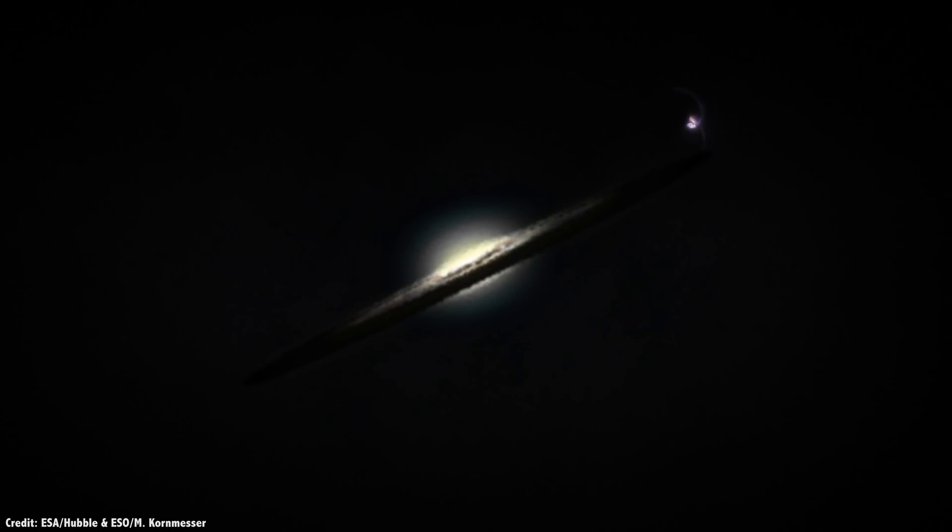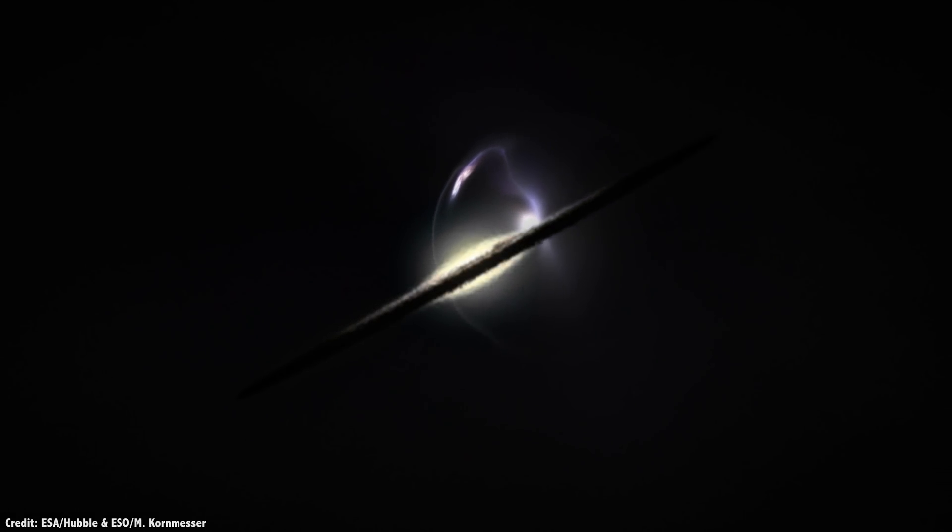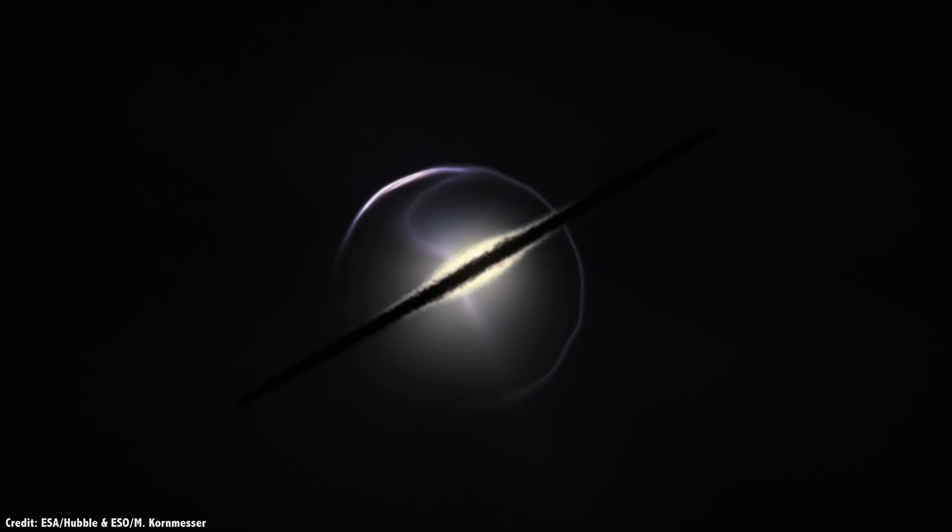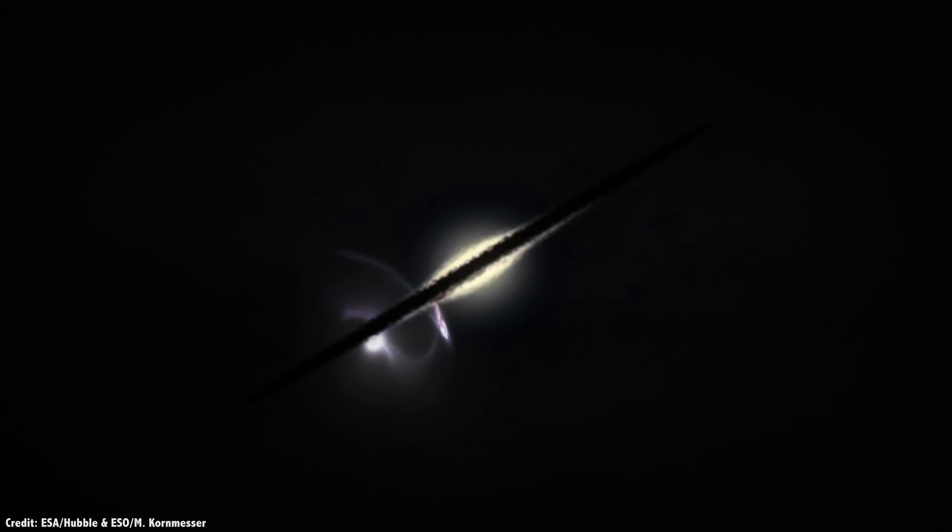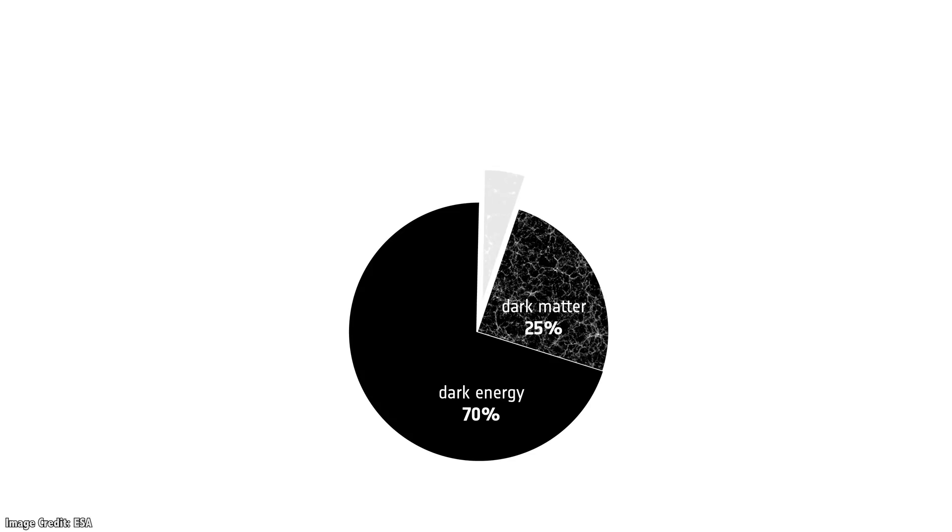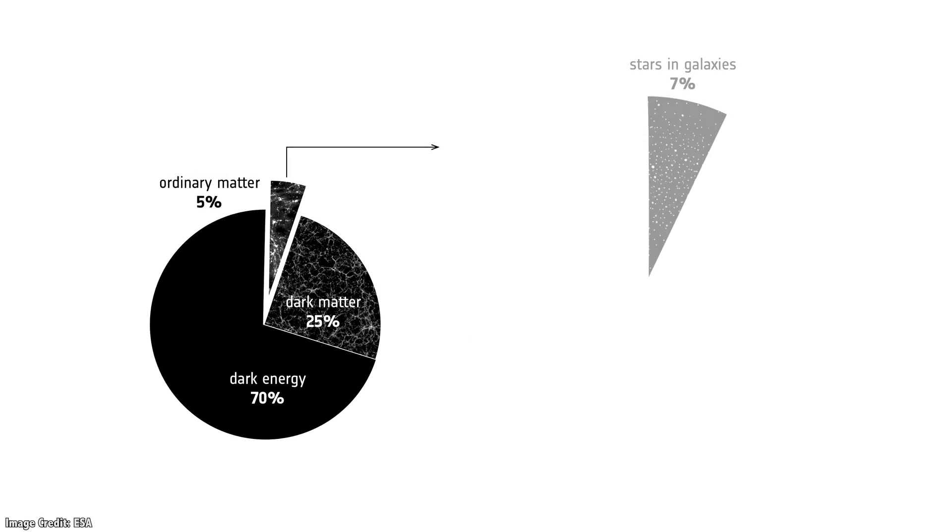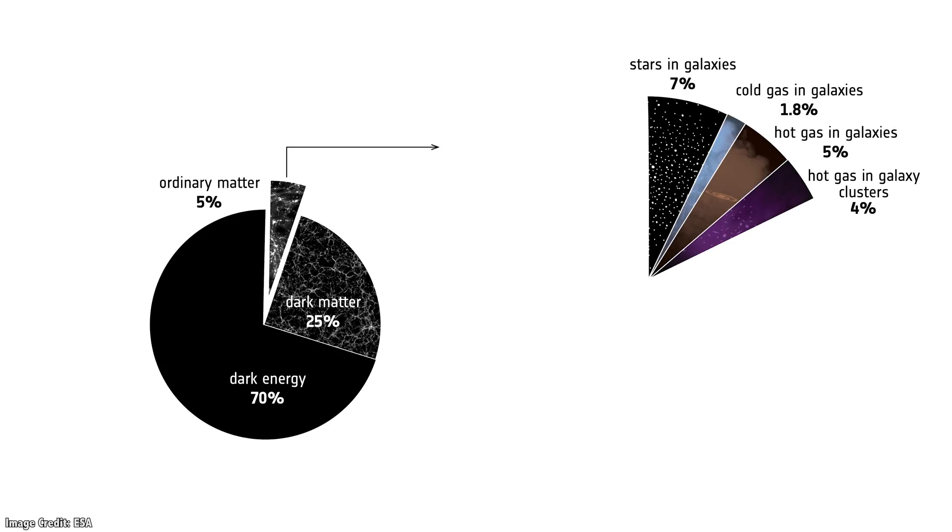Another technique that astronomers use is gravitational lensing. This is where the gravity of a galaxy cluster can distort the light from more distant galaxy clusters. By measuring the amount the light is distorted, they can calculate the amount of mass in the cluster. The point is, astronomers had done the math, and had determined the following amounts of matter in the universe. Remember, these are fractions of the roughly 5% regular stuff, not that 95% dark matter, dark energy. 7% is stars in galaxies, 1.8% cold gas in galaxies, 5% is hot gas in galaxies, 4% is hot gas in galaxy clusters, and that's still left about 83% of baryonic matter as mystery mass.